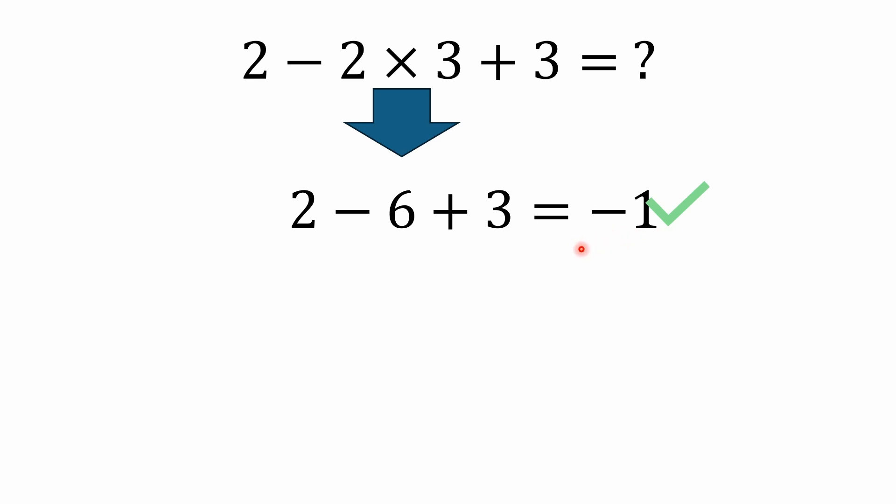Now a lot of people will end up with the wrong answer of 3 because they're just simply working left to right. And a lot of people make wrong assumptions. They assume, well, I read a sentence left to right, you just do math left to right, ignoring everything else. That's not true and it's never been true. A lot of people will go 2 minus 2 is 0, 0 times 3 is 0, 0 plus 3 is 3 and they'll get the wrong answer of 3. That's not correct because they're ignoring the order of operations.